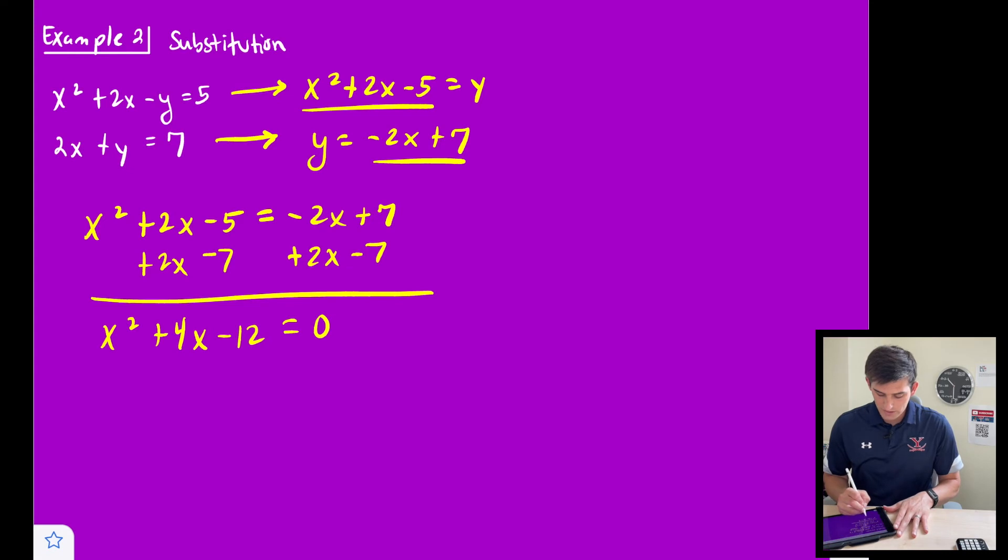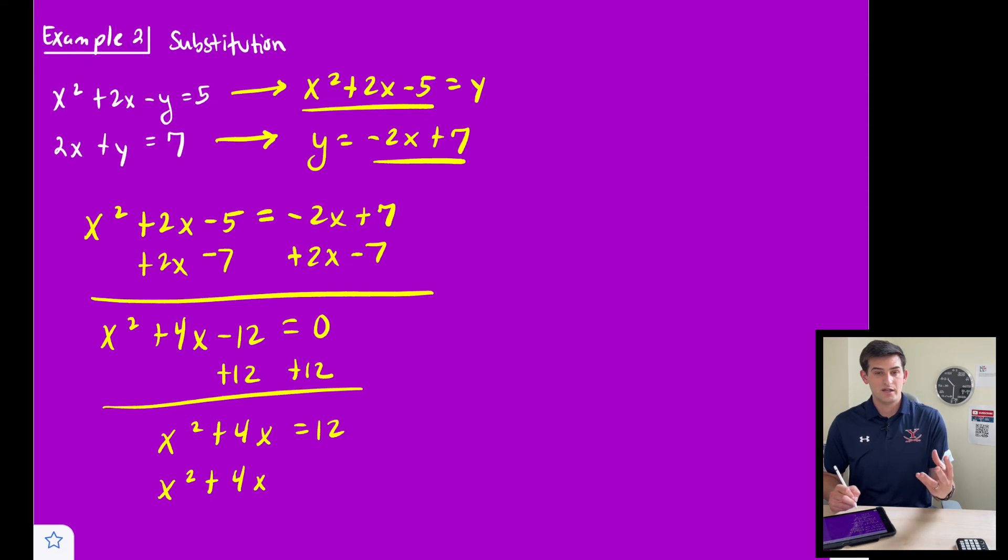So let's try a process of completing the square. So let's add 12. So now we have x² + 4x = 12. Let's complete the square. So we have x² + 4x, b divided by 2 squared. So 4 divided by 2 is 2. So let's plus 4. And that is equal to 12 plus 4.